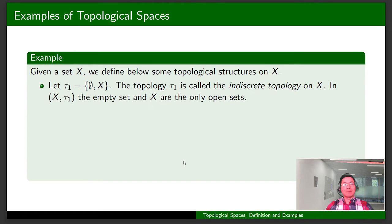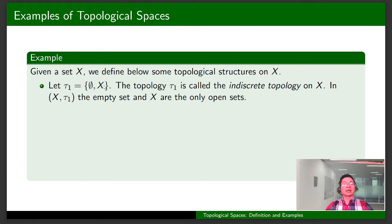Next, I'm going to talk about some examples of topological spaces. Given a set X, we define below some topological structures on X. Let τ₁ be the collection of subsets of X consisting of only the empty set and X. We can easily verify that τ₁ is a topology on X and it is called the indiscrete topology on X.